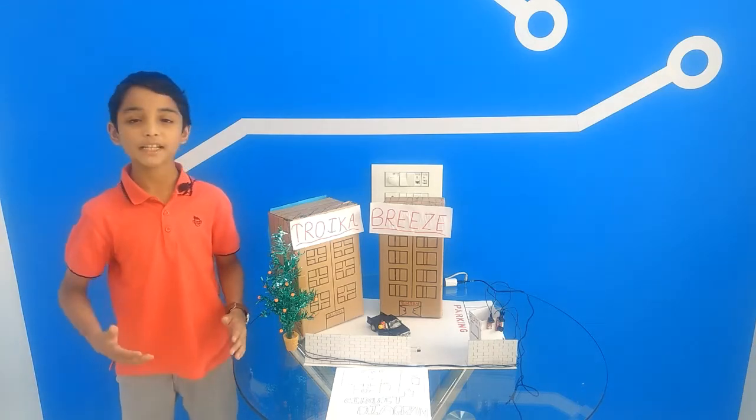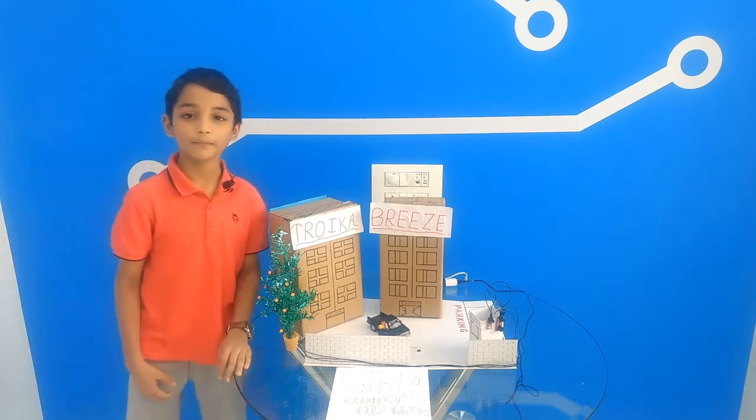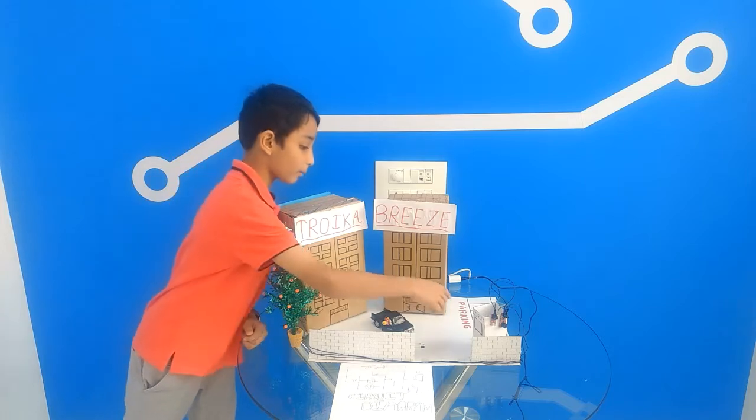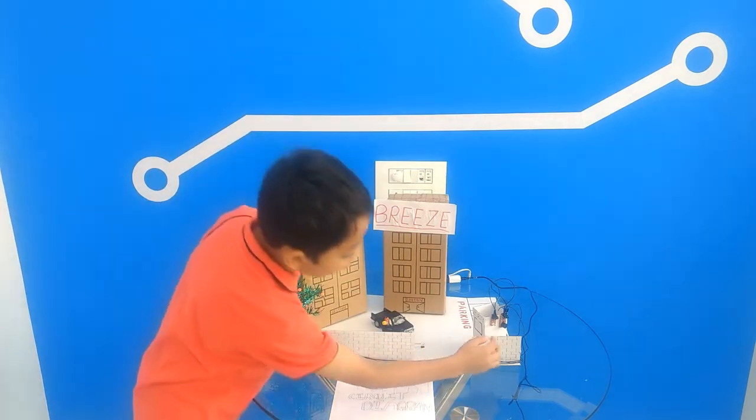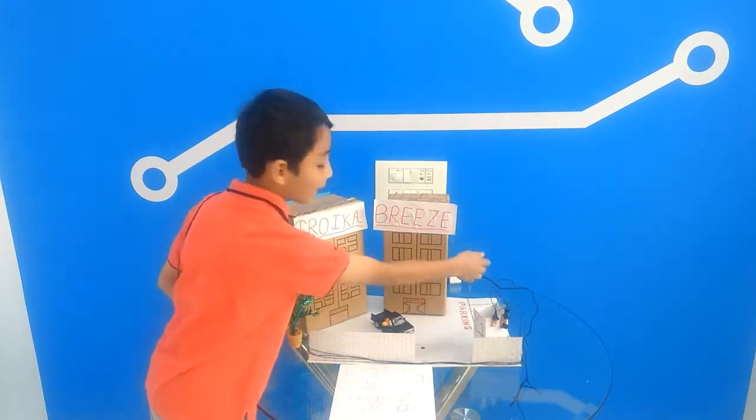I have completed my foundation level project and this is my project automatic guarding system. The components I have used are one power supply board, one push button, one IR sensor, one LED and one buzzer and one battery.